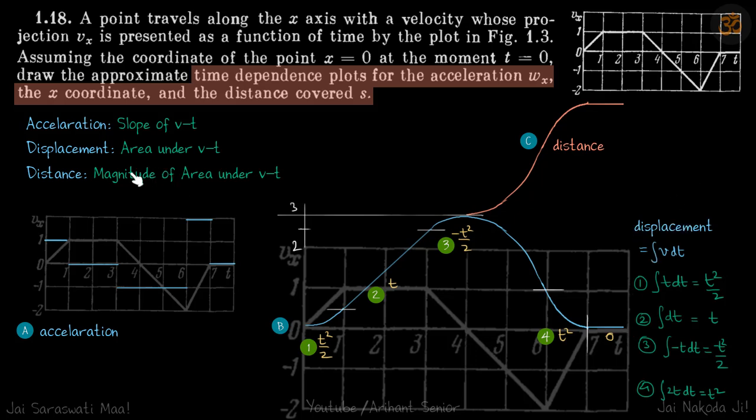Now for distance, distance always increases, so up to here it will be the same as displacement because it's increasing in one-dimensional motion. After that, displacement is decreasing as the particle comes back, but distance will continue to increase. So it will be a mirror image of this path. These are our answers.